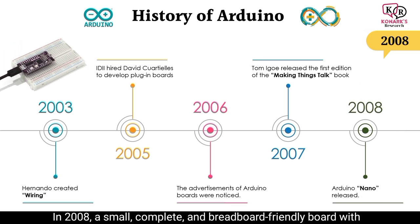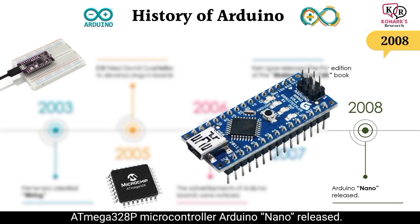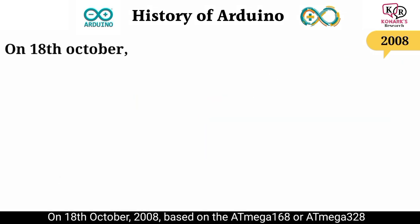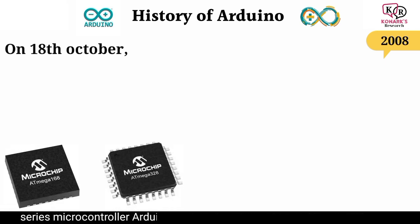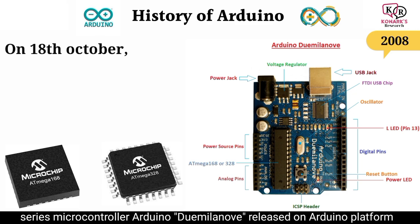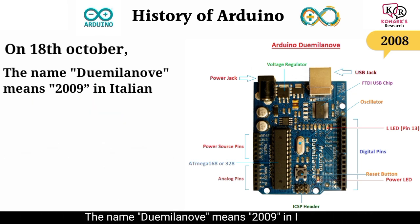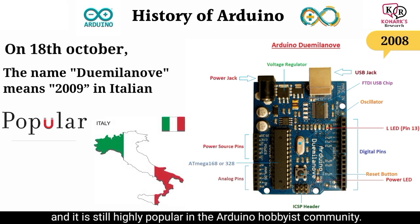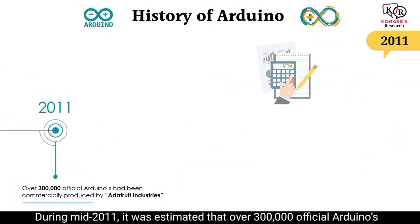The commercial version of the LilyPad Arduino was designed using the ATmega168 or ATmega328V series microcontroller for e-textiles and wearable projects, collaboratively designed and launched by Leah Buechley and SparkFun Electronics in 2007. In 2008, the Arduino Nano — a small, complete, and breadboard-friendly board with an ATmega328P microcontroller — was released on 18 October 2008. Based on the ATmega168 or ATmega328 series microcontroller, the Arduino Duemilanove was released. The name Duemilanove means 2009 in Italian and is still highly popular in the Arduino hobbyist community.